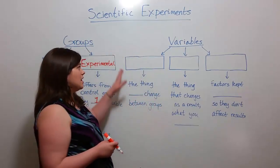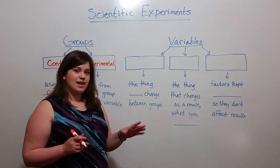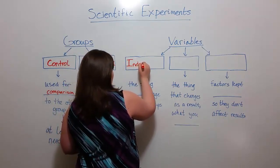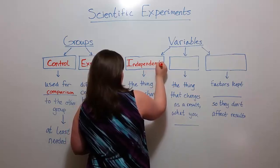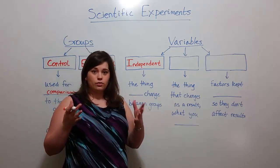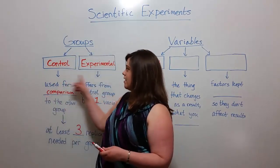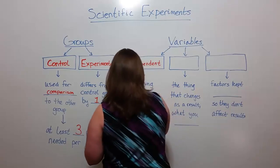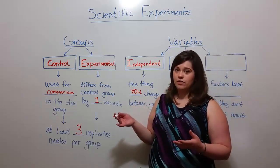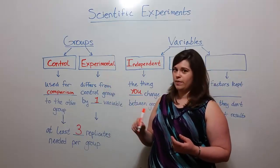With that experiment in mind, let's talk about different variables. The first variable to keep in mind is called the independent variable. The independent variable is the thing that you, the researcher, the experimenter, change between these two groups — so the thing that you change. In our example, that's the type of light: either natural light with the control group or the purple wavelength light with the experimental group.